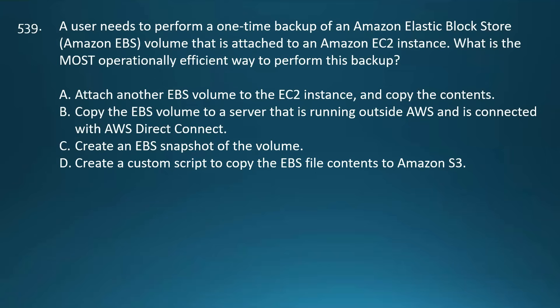A user needs to perform a one-time backup of an Amazon EBS volume that is attached to an Amazon EC2 instance. What is the most operationally efficient way to perform this backup? Your options are: attach another EBS volume to the EC2 instance and copy the contents; copy the EBS volume to a server running outside AWS connected with AWS Direct Connect; create an EBS snapshot of the volume; or create a custom script to copy the EBS file contents to Amazon S3.